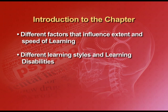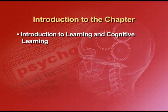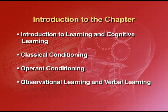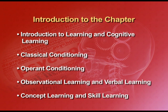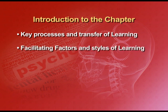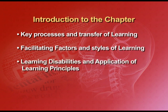For the convenience of your learning, this chapter has been divided into eight parts. First, introduction to learning and cognitive learning. Second, classical conditioning. Third, operant conditioning. Fourth, observational learning and verbal learning. Fifth, concept learning and skill learning. Part six talks of key processes and the transfer of learning. Part seven covers factors facilitating learning and different styles of learning. And the final part, part eight, talks of learning disabilities and the application of learning principles to daily life.